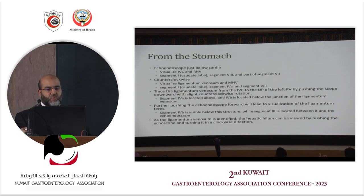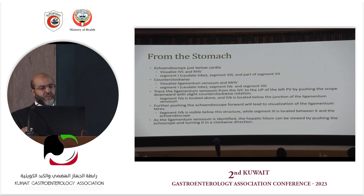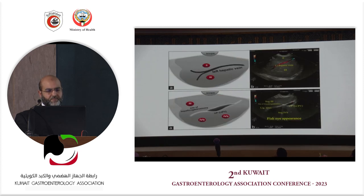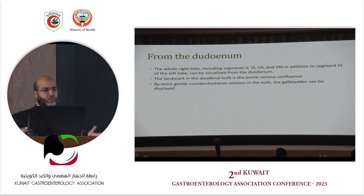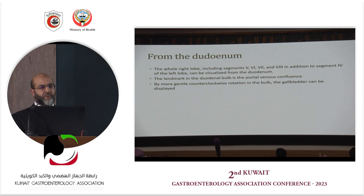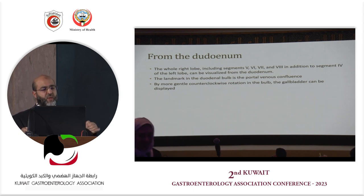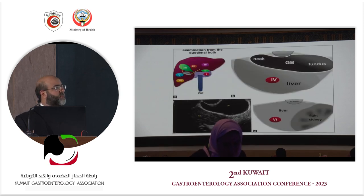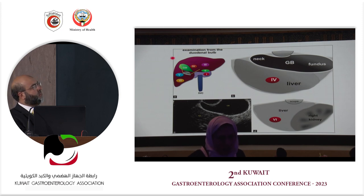As you push forward further, you see other segments until you reach the ligamentum venosum, at which point you see the hepatic hilum. You can probably see 70% of the liver from the stomach just below the cardia. From the duodenum, you see the right lobe mostly — segments 5, 6, 7, and 8. The landmark is the portal venous confluence, and with counterclockwise rotation the gallbladder is visualized.